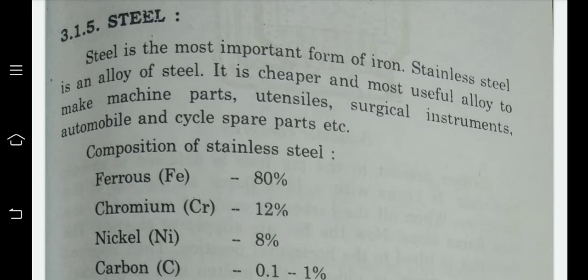Steel is the most important form of iron. Stainless steel is an alloy of steel — it is cheaper and the most useful alloy to make machine parts, utensils, surgical instruments, automobiles, cycle spare parts, and so on.